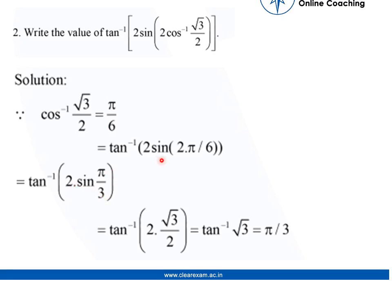So in the bracket we are now left with 2 sine pi by 3. We know sine pi by 3 value, that is root 3 by 2, so we'll multiply 2 into root 3 by 2.